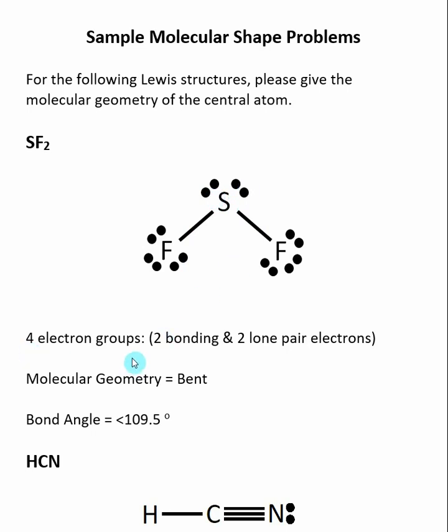That gives us four electron groups, and because two of them are lone pair electrons, the molecular geometry is bent. Also we can tell that the fluorine-sulfur-fluorine bond angle is slightly less than 109.5 degrees.